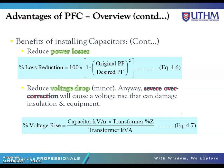Capacitors also reduce power losses. The percentage of loss reduction is calculated as: 100 × [1 − (original power factor / desired power factor)²]. We must also monitor voltage because severe overcorrection can cause a voltage rise that damages insulation and equipment. The percentage voltage rise is calculated as: (capacitor kVAR × transformer percentage Z) / transformer kVA.